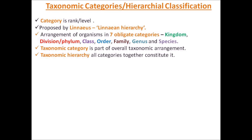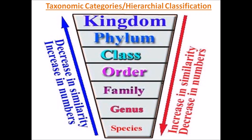This can be represented in the form of a graphic or schematic representation. The highest or topmost category is the Kingdom; the smallest category is the Species. As we move from Species to Kingdom, there is a decrease in similarity but an increase in number of organisms — for example, tiger is a species (tigris), but lions, tigers, whales, and all mammals come under the class Mammalia.